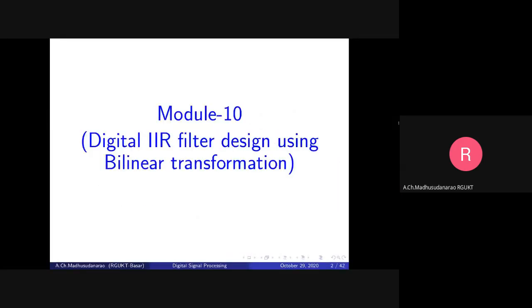Digital IIR filter design using bilinear transformation: the goal is to first design the analog filter. Once we have H(s), we transform s into z so that we end up with the required H(z), which is the desired digital filter.